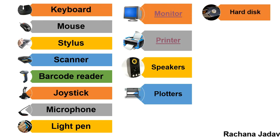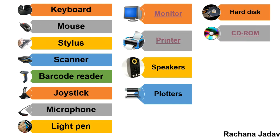Now, secondary storage devices. The hard disk — everyone knows it is found inside the CPU, laptop, and all computers. Without a hard disk, the system cannot work. Inside a hard disk there are platters, and a collection of disks is known as platters, which keep track using cylinders.